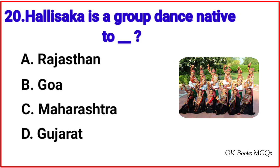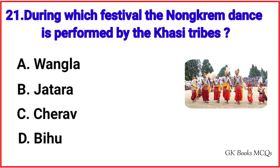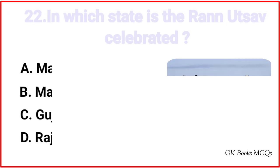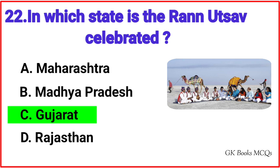Question number 20: Hali Saka is a group dance native to? Correct answer is option D, Gujarat. Question number 21: During which festival is the Namkrim dance performed by the Khasi tribes? Correct answer is option A, Vangla. Question number 22: In which state is the Ran Utsaf celebrated? Correct answer is option C, Gujarat.